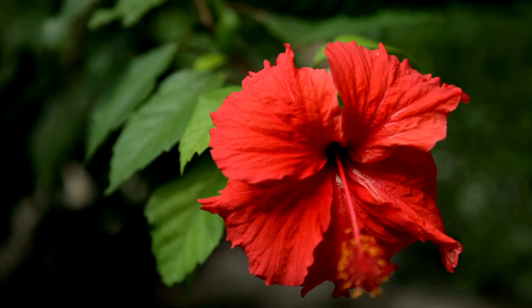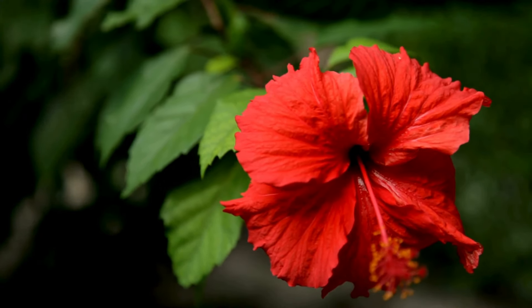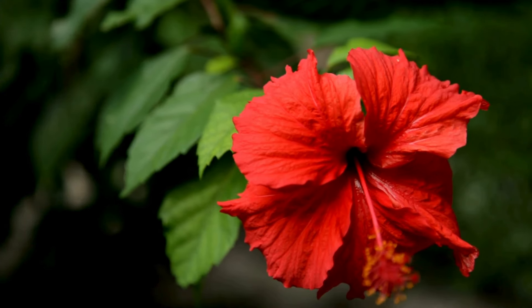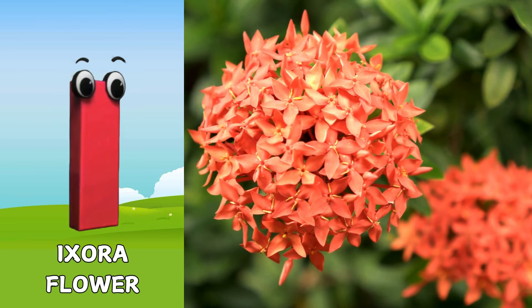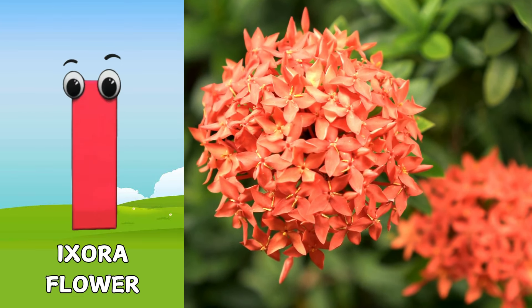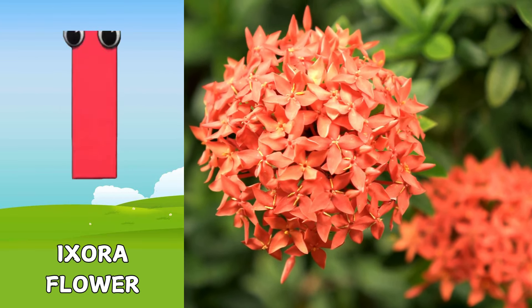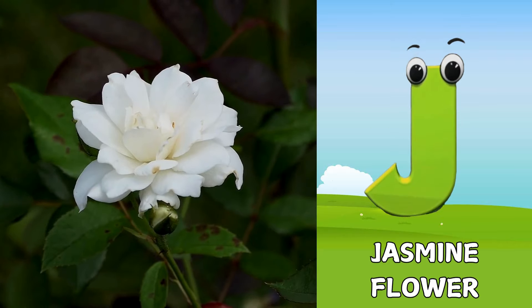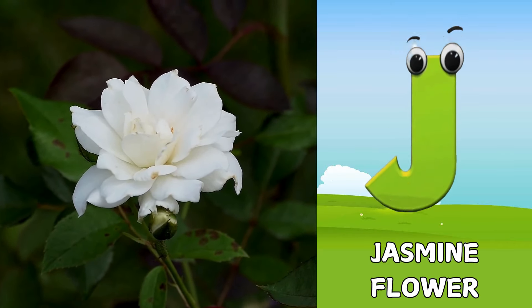Hibiscus flower. I is for ixora flower. I, i. Ixora flower. J is for jasmine flower. J, j.